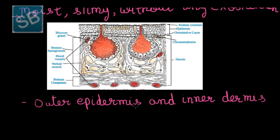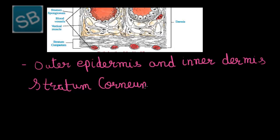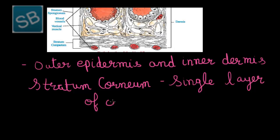The outer epidermis is made up of several layers of epidermal cells. This epidermis is further divided into two parts: stratum corneum and stratum germinativum. Stratum corneum forms the outer layer and stratum germinativum forms the inner layer. Stratum corneum is made up of a single layer of cells which are dead and shed periodically.